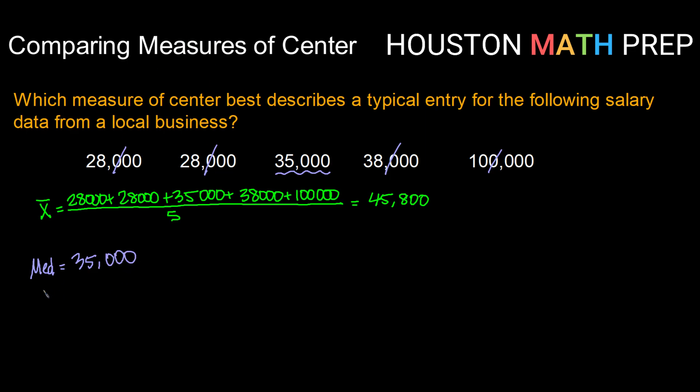And then finally, we have our mode. So our mode is whatever data value or values occurs most often, if there is one. In this case, out of this sample, we see 28,000 is repeated twice. All the others only occur one time, so our mode is 28,000.